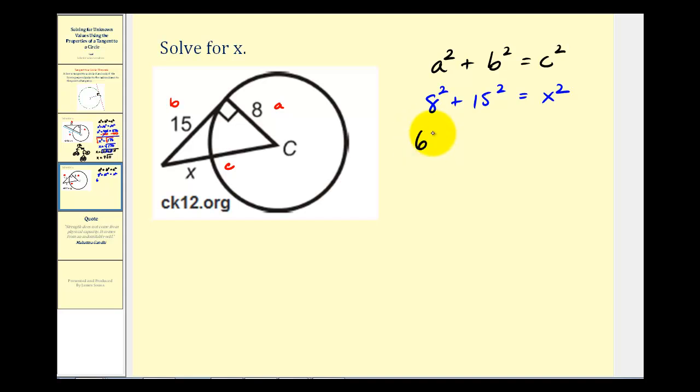Eight squared is equal to 64. Fifteen squared is equal to 225. Sixty-four plus 225 equals 289. And again, I'm going to take the square root of both sides.